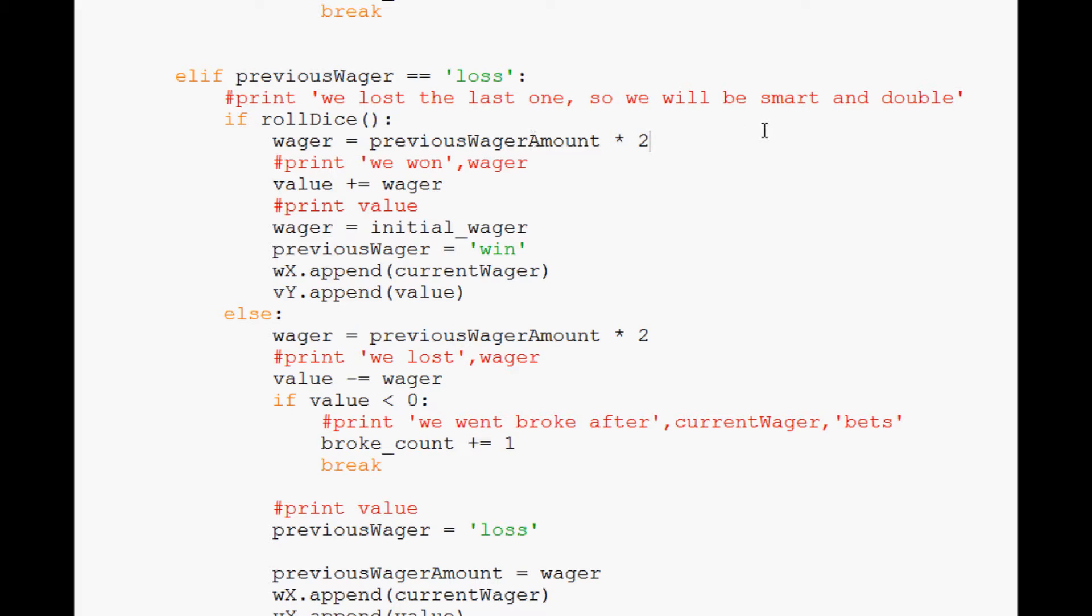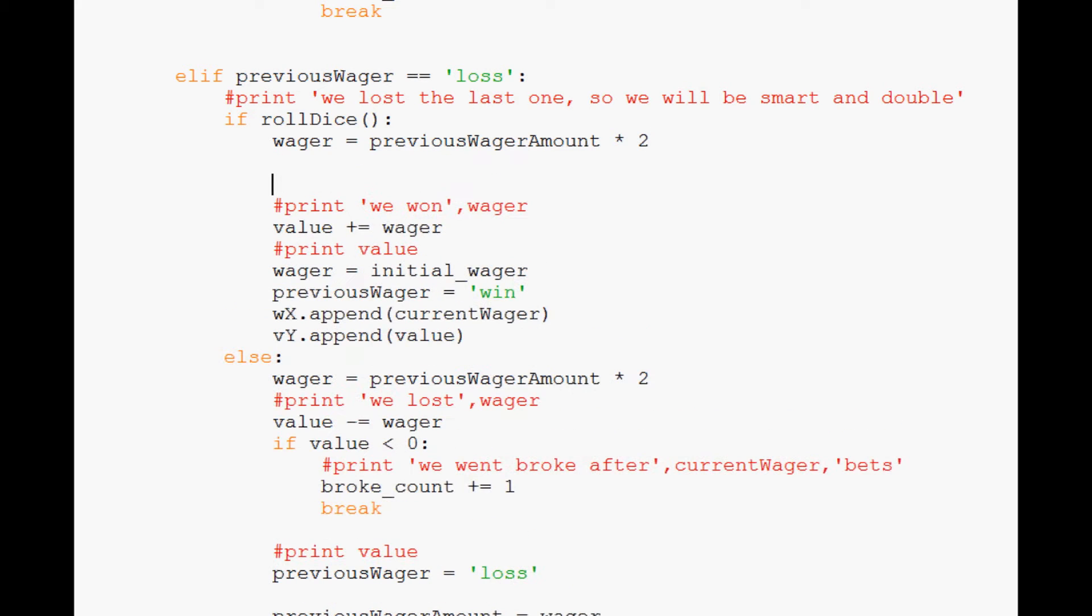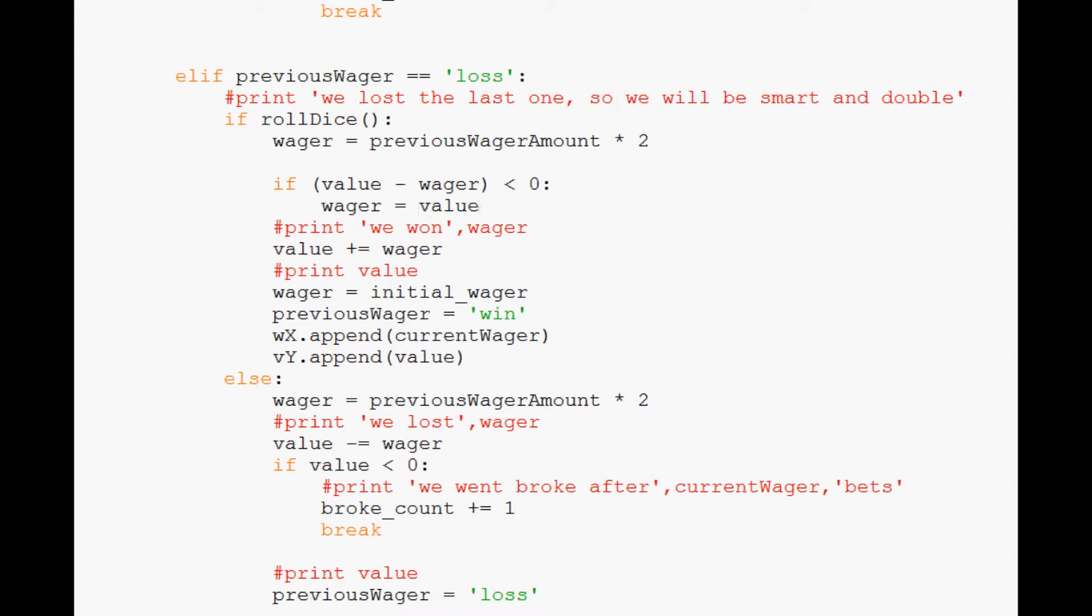We'll come here and then we'll say if value minus wager is less than zero, wager equals value. So this way we will only wager what we have left. We won't be able to wager into the negatives. We were allowing this to kind of occur before and now we are not allowing this to occur.